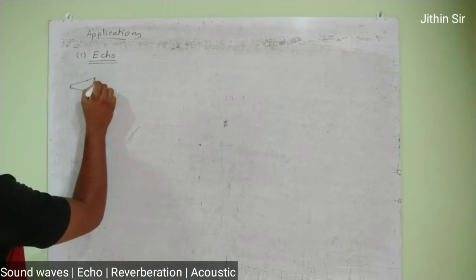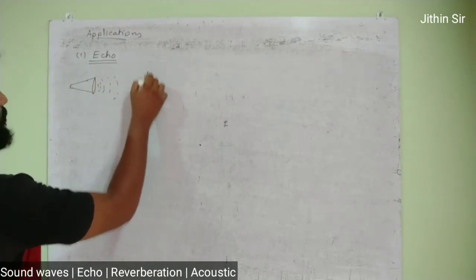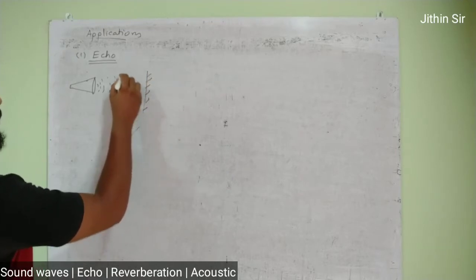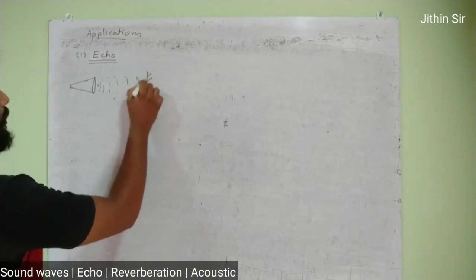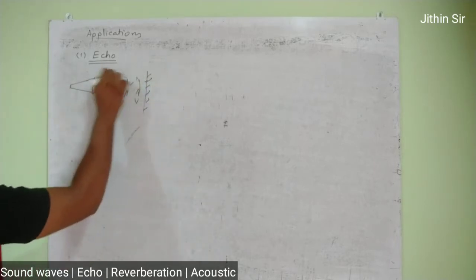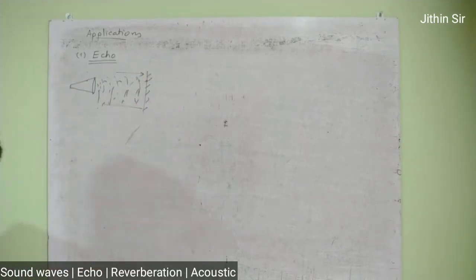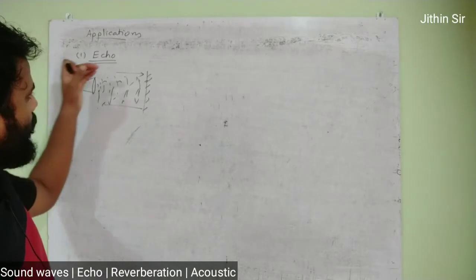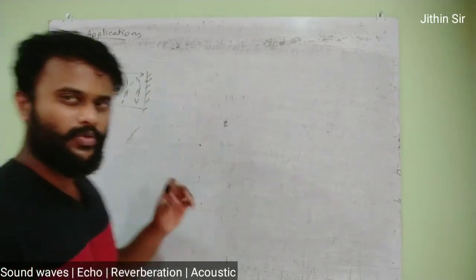and there's a wall here, the sound will reach there, hit the wall, and return back. So it goes out and returns. When it comes back to the same point where it originated after hitting the wall, that phenomenon is called echo.